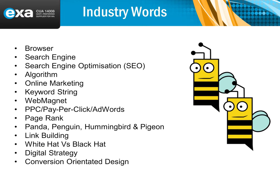There are some keywords and terms I'd like to go through with you. Different words used in this space include: browser, search engine, search engine optimization, algorithm, online marketing, and keyword strings. There are a lot of different keywords. I just want to explain a few of them quickly so we have context when we go into social media.